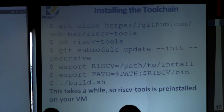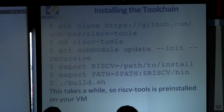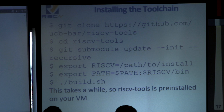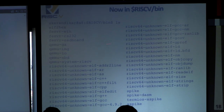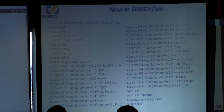On your own machine, you'll want to follow these steps to install the toolchain. Clone the repo from the UCB-bar organization, then run git submodule update --init --recursive to pull in all submodules. The big thing is to set the RISCV environment variable, which tells the toolchain where to place everything it builds. Then put RISCV/bin on your path so you have access to all the tools. Run the build script, which will install almost all of the tools automatically. Once done, you'll get FESVR components, QEMU, all the GNU toolchain pieces, and Spike.